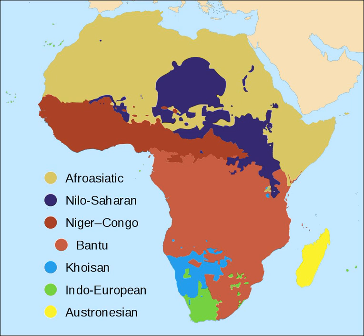There are five Khoisan families that have not been shown to be related to each other: Khoe, Tuu and Kwadi, found mainly in Namibia and Botswana, as well as Sandawe and Hadza of Tanzania, which are language isolates. A striking feature of Khoisan languages, and the reason they are often grouped together, is their use of click consonants. Some neighboring Bantu languages have clicks as well, but these were adopted from Khoisan languages. The Khoisan languages are also tonal.